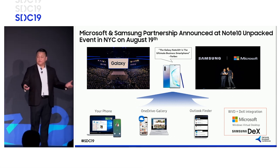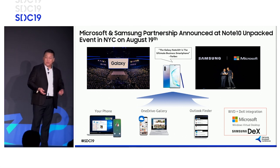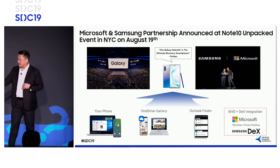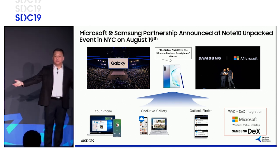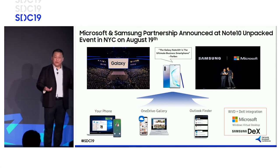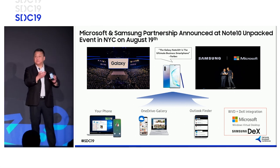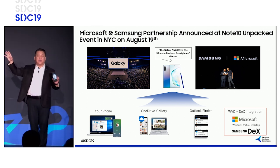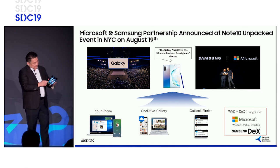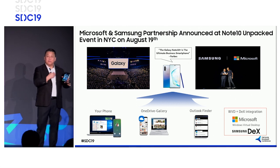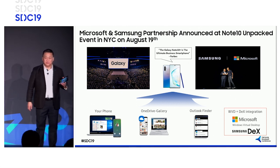We unveiled new features and functionalities like Your Phone, where you can take our mobile devices and share messages and notifications with a Windows 10 device, and also make phone calls from the Windows 10 device. We also enabled easy access to OneDrive in the cloud — easy, secure, and really convenient. And one of my favorite features: using the Samsung search bar, you can search for all of your Outlook content directly from your mobile device. Fantastic feature, great feedback from the market already.